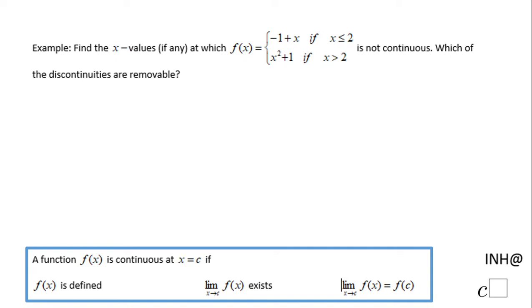Welcome or welcome back to NHC Squared. In this example we have a piecewise function, and we need to find the value of x, if any, at which this function is not continuous. Whenever you have a piecewise function like this, you want to look at this value - in this case x equals 2. We're going to look at what happens at x equals 2. Is the function continuous at x equals 2?